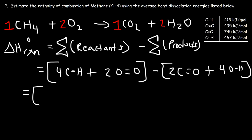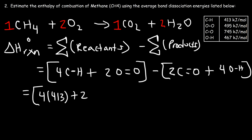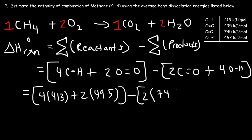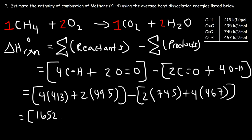Now we can do the calculations. Replacing C-H with 413 gives 4 × 413. The O=O double bond energy is 495, giving 2 × 495. Then minus the C=O double bond value of 745 giving 2 × 745, and the O-H value of 467 giving 4 × 467. So: 4 × 413 = 1652, 2 × 495 = 990, 2 × 745 = 1490, and 4 × 467 = 1868.